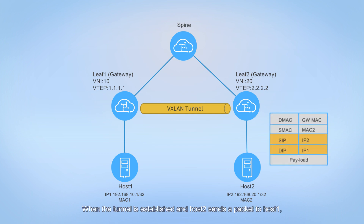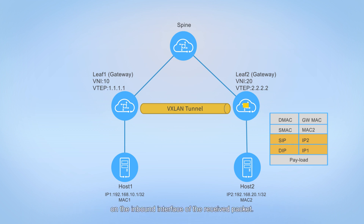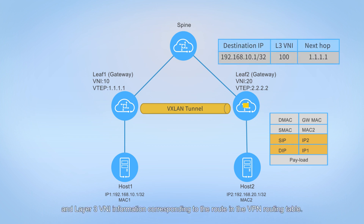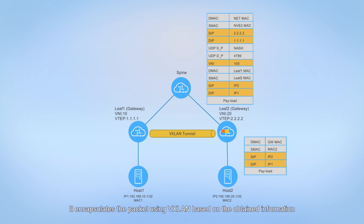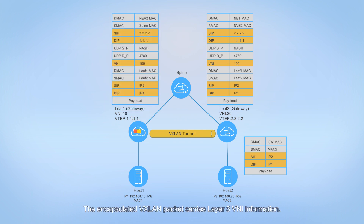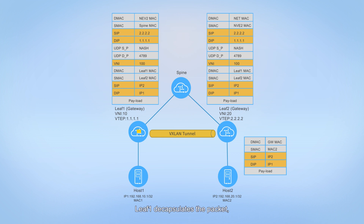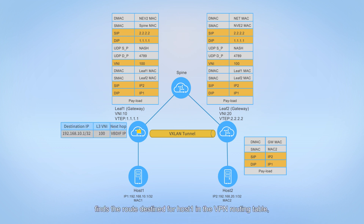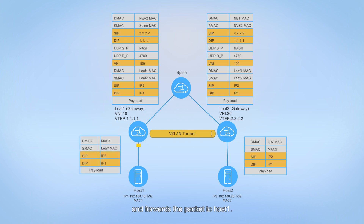When the tunnel is established and host 2 sends a packet to host 1, leaf 2 finds the corresponding BD and the VPN corresponding to the BD depending on the inbound interface of the received packet. Leaf 2 then searches for the route destined for host 1 and the layer 3 VNI information corresponding to the route in the VPN routing table. It encapsulates the packet using VXLAN based on the obtained information and forwards the packet to leaf 1. The encapsulated VXLAN packet carries layer 3 VNI information. After receiving the VXLAN packet, leaf 1 decapsulates the packet, finds the corresponding VPN based on the layer 3 VNI carried in the packet, finds the route destined for host 1 in the VPN routing table, and forwards the packet to host 1.